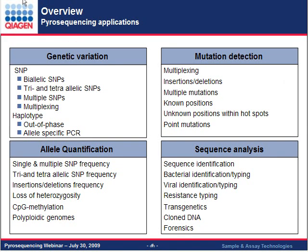This is a busy slide talking about some of the applications people use pyrosequencing for. What we're mainly going to focus on today is the bottom right-hand corner in the sequence analysis range — different types of microbial typing and resistance typing. Keep in mind, with the same platform, you can also do tri- and tetra-allelic SNPs, very complex mutation analysis, methylation analysis, haplotyping, and many other applications with the same sample prep process.